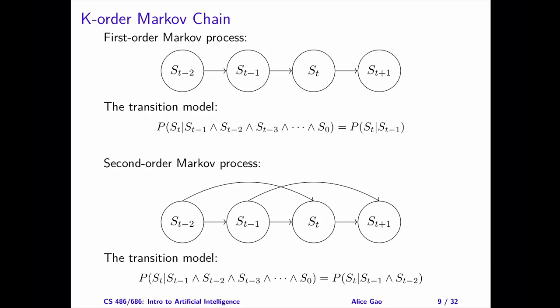The simplest case is a first-order Markov process. Each state depends on the previous state only. Mathematically, the transition probability equals the conditional probability of S sub t given the previous state at S sub t minus 1. Graphically, this model is a single chain.